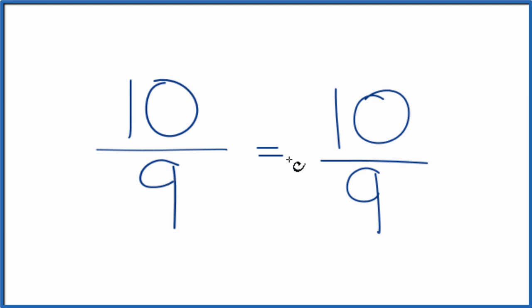So the fraction 10 ninths, it's already simplified. It's in lowest terms. We could change 10 ninths to a mixed number. Right now it's an improper fraction because the numerator is larger than the denominator. Let's do that.